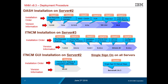Once Server 2 work is complete, move to Server 3 for ITNCM deployment. The order is much the same. You will have two DASH installations because ITNCM requires its own profile — it cannot coincide inside the ITNM profile. Once that is done, perform the ITNCM integration with ITNM back on Server 2, and finally run the single sign-on steps.